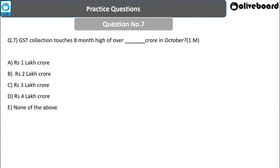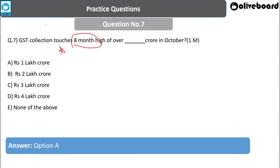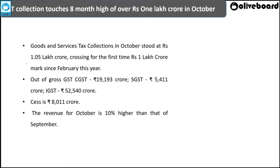Next question: GST collection touched an eight-month high of over how many crores in October? This is highly likely to be asked in Phase One. The answer is ₹1 lakh crore. GST collection touched an eight-month high of ₹1.05 lakh crore in October.